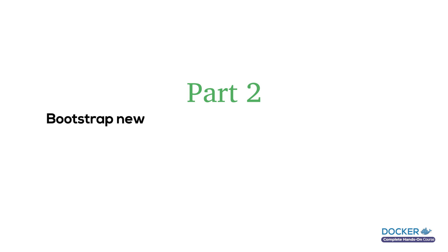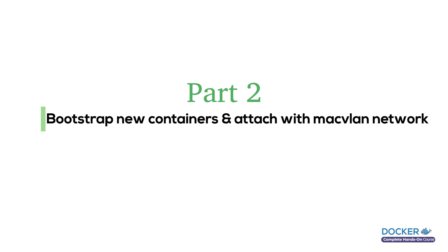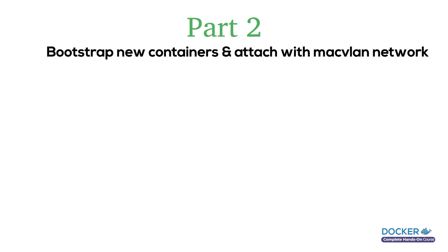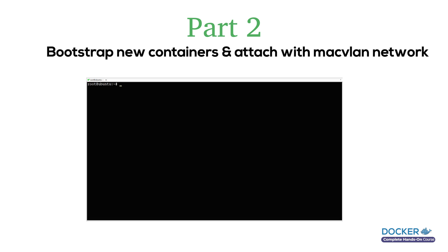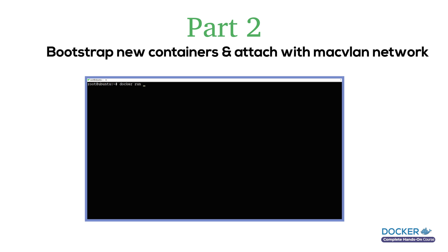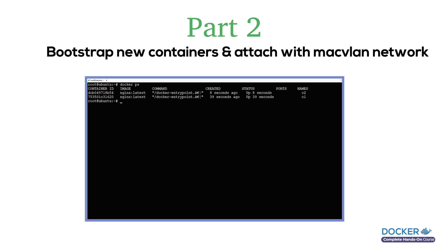Next, we will create two containers and attach them to the MacVLAN network using the --network option. We will run the first container with the nginx image. Additionally, let's run the second container. For that we will use the --ip flag to assign a static IP to avoid IP conflicts with your main network. Let's have a look at the docker ps command to see the health of both containers.